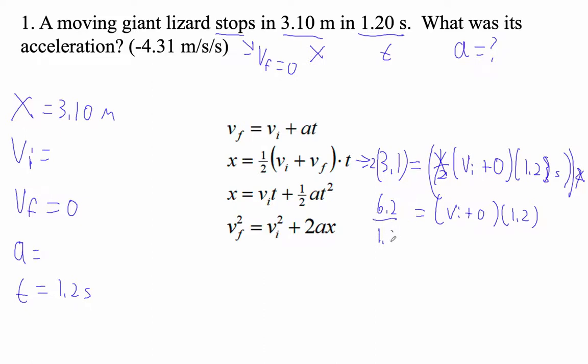So the next thing I'm going to do is I'm going to divide by 1.2. So let's go 6.2 divided by 1.2. I get 5.166666. So is equal to the initial velocity.